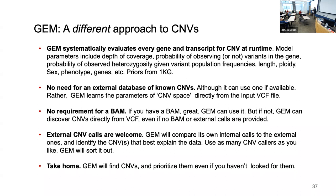There's no need for an external database of known disease-causing CNVs — GEM learns everything it needs from the 1000 Genomes data plus the input VCF. There's no requirement for a BAM, though if one is available GEM performs better. GEM will discover CNVs directly from the VCF file at runtime. External CNV callers are also welcome — GEM will use those and determine which best explain the data. We currently run the standard DRAGEN pipeline plus Manta at Rady, generating about 2,000 CNVs per proband.